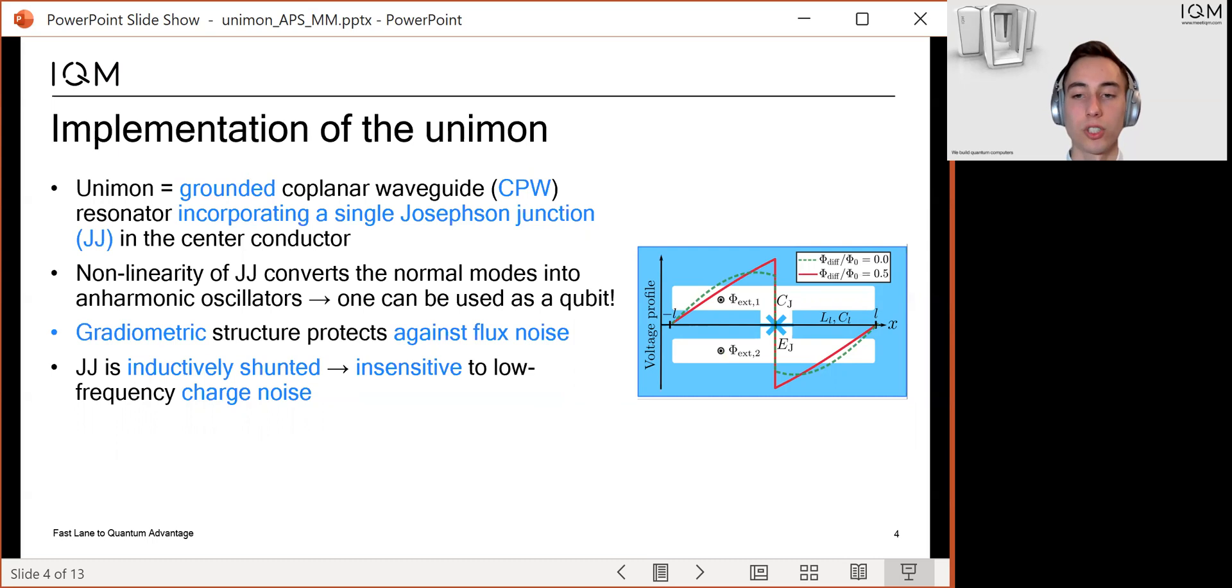You can also see that the junction is inductively shunted by the center conductor. This makes the circuit island-free and insensitive to low frequency charge noise.